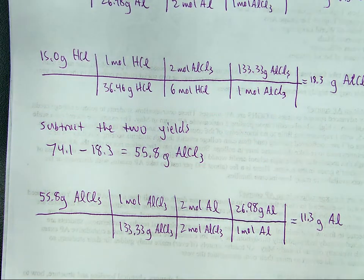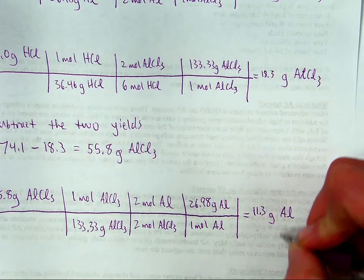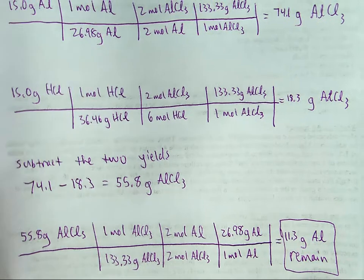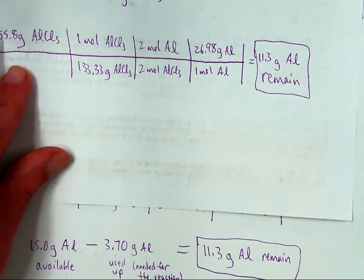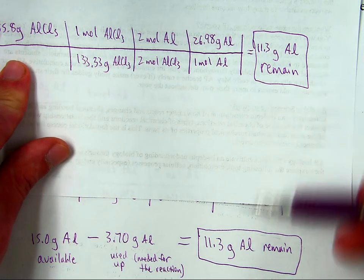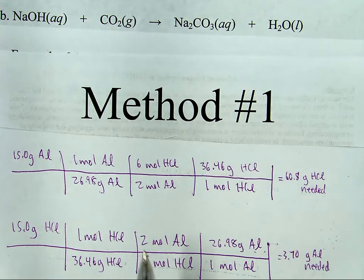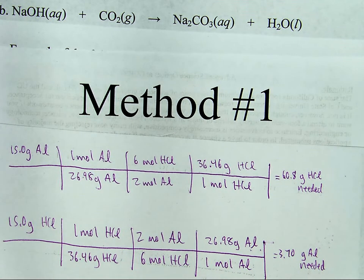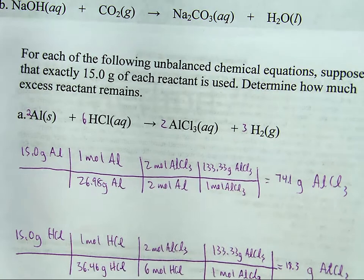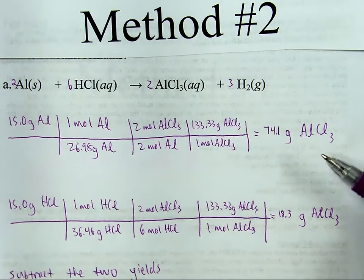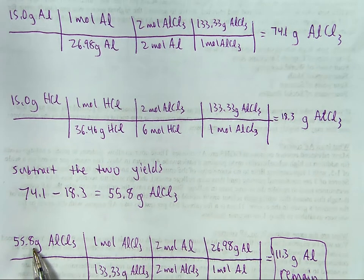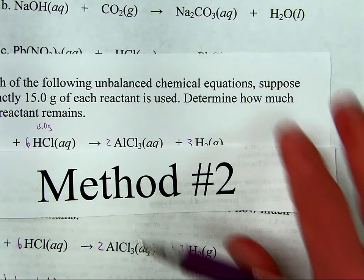So 11.3 grams of aluminum remain — that's method number two. Both methods yield the same result. Whether you prefer method number one, where you see how much each reactant needs of the other, compare what you need to what you have, and subtract to find what remains — or method number two, where you calculate how much product each reactant makes, subtract the two yields, and back-calculate to find the excess reactant remaining — either way, you get the same answer.